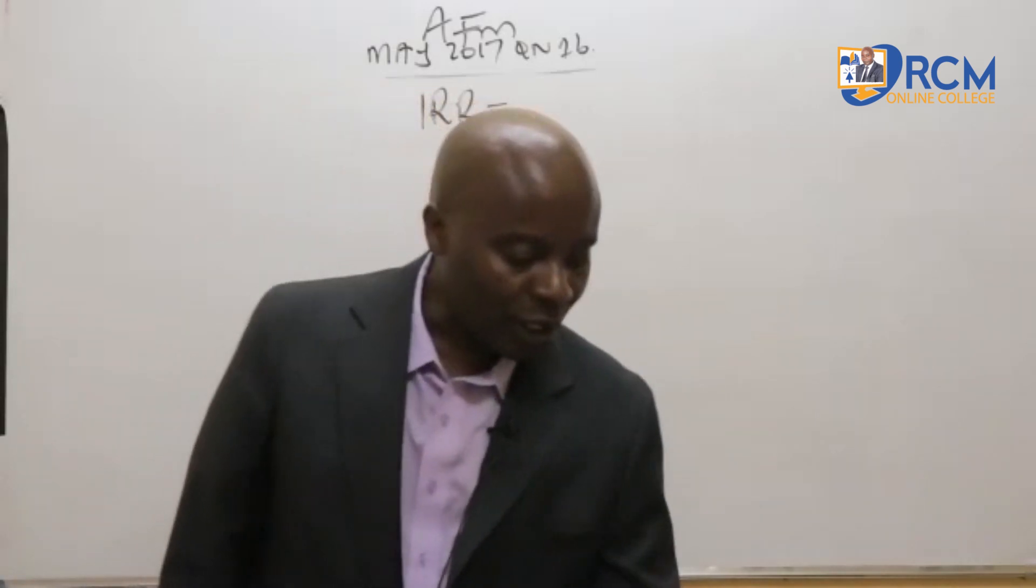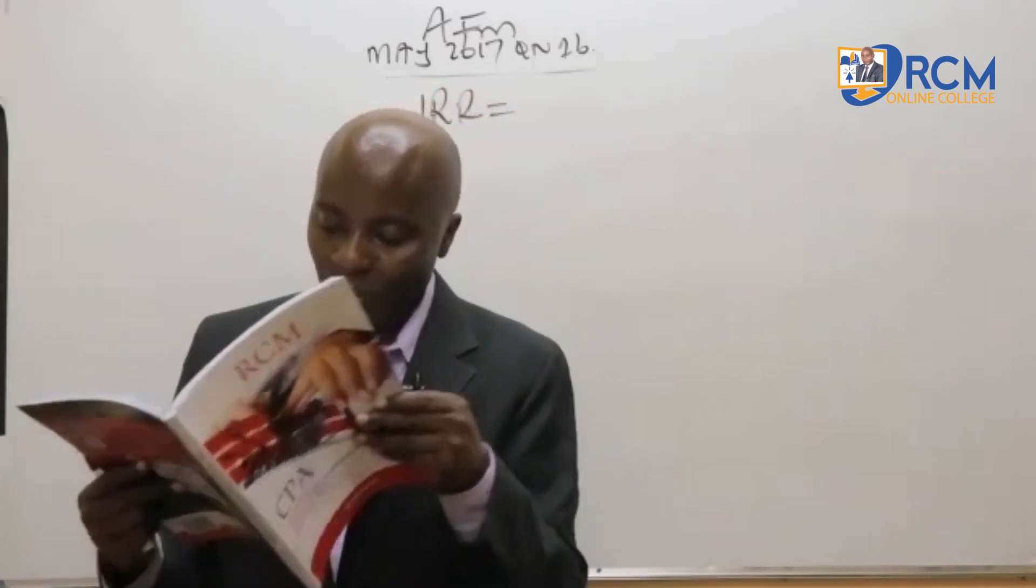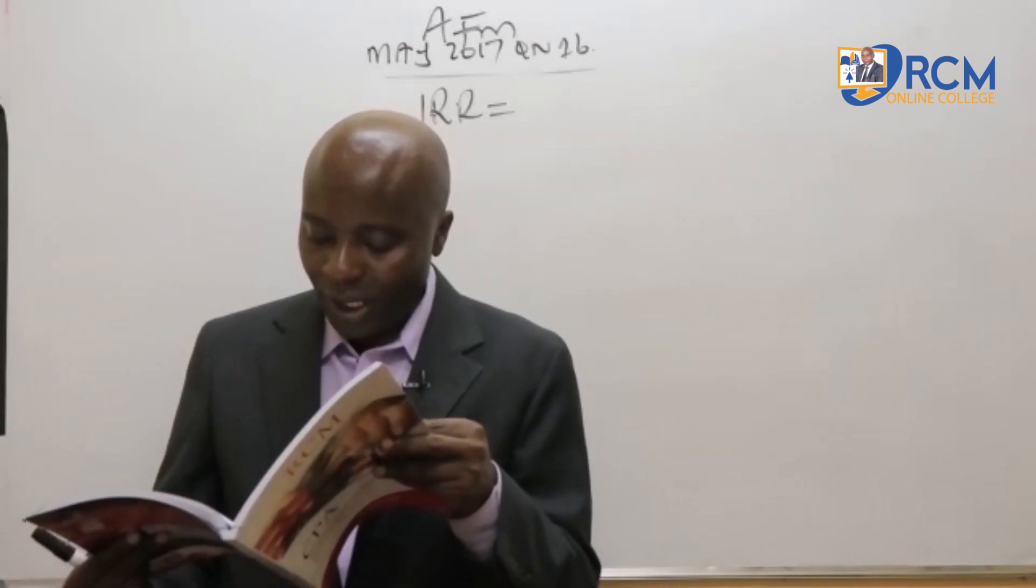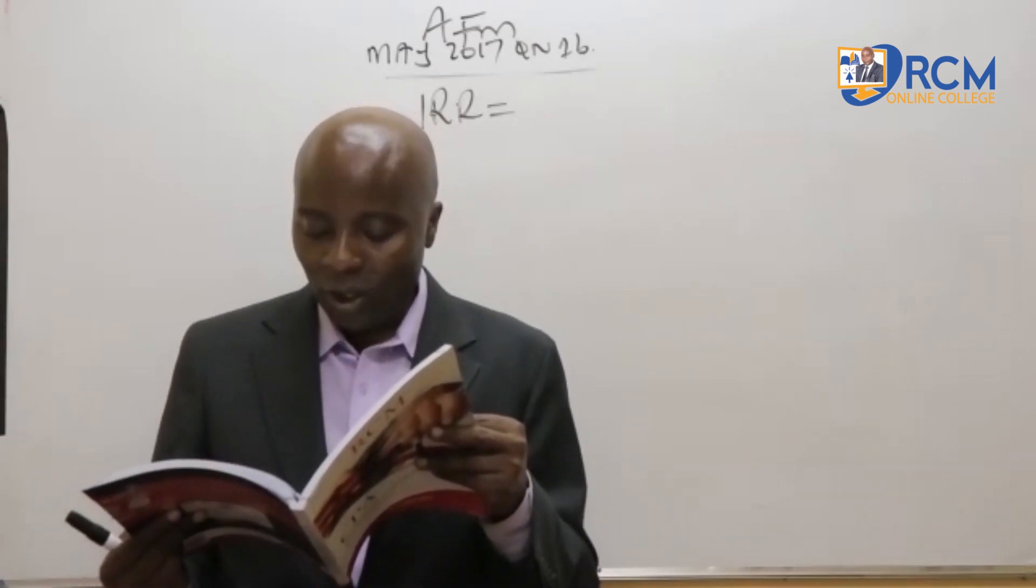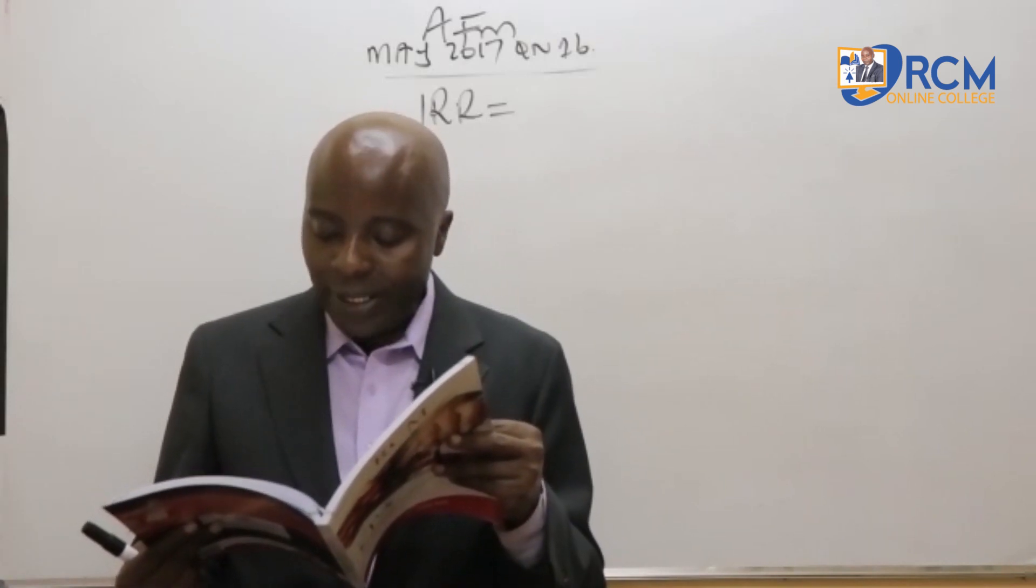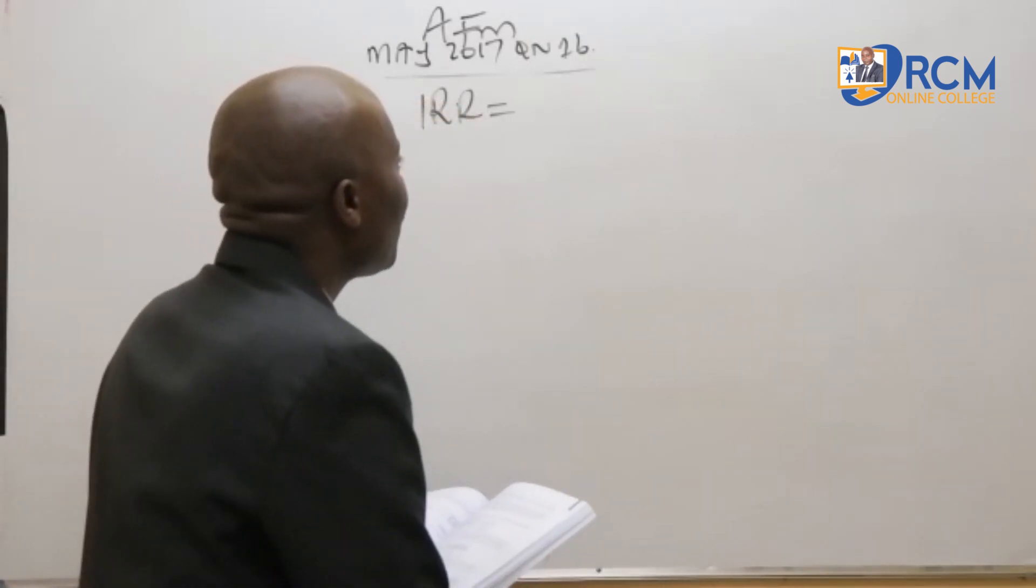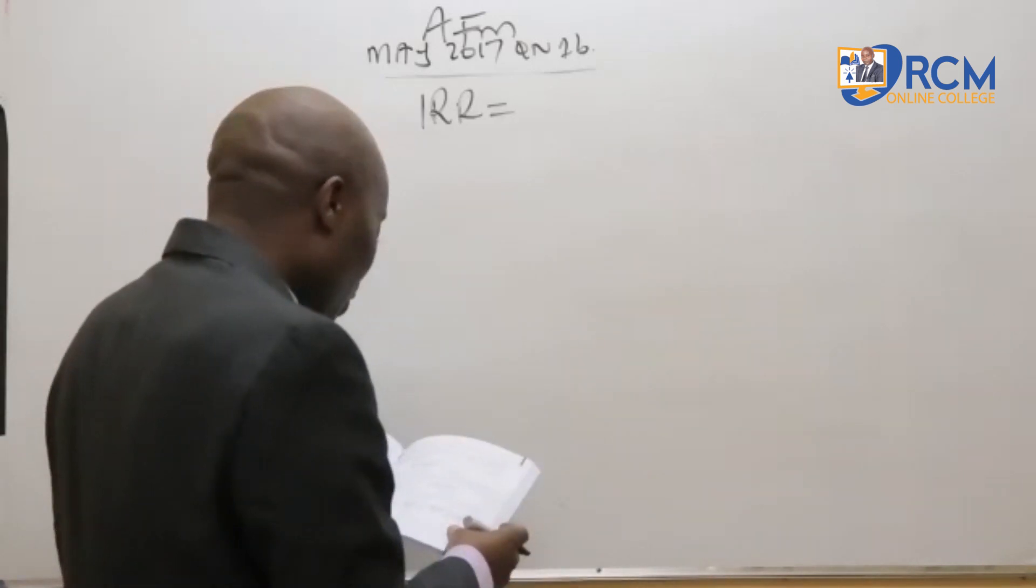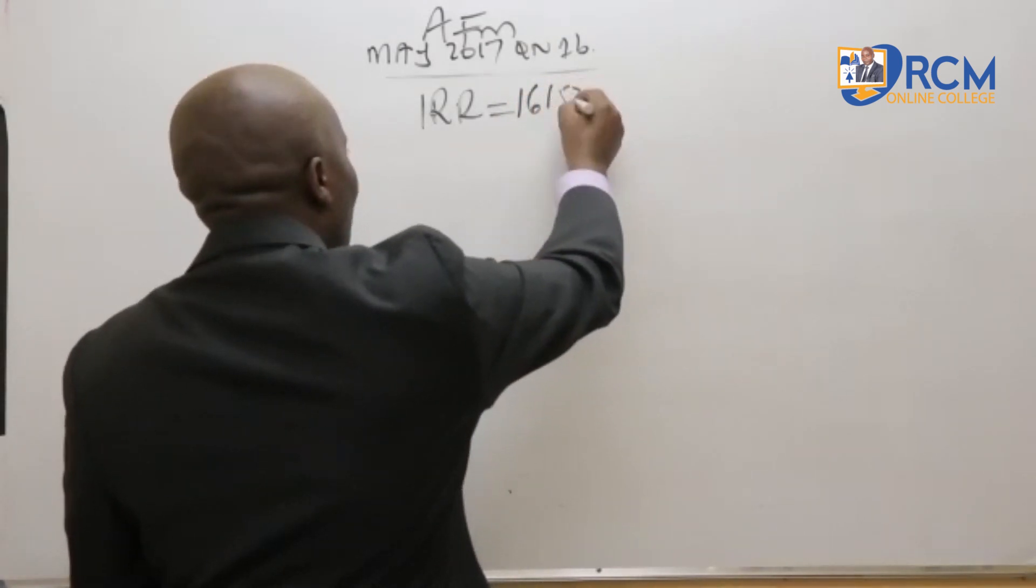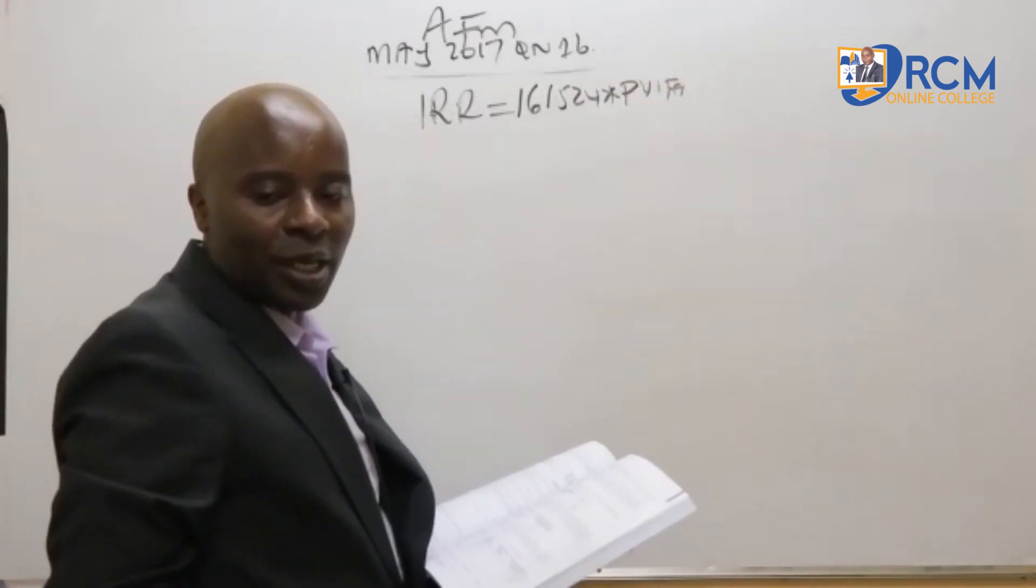So for project C that is missing there, for project C which is missing here. I can see the cash outlay, the initial cost there is 375,000, and then the annual net cash flow is 161,525. Out of this annual net cash flow, I should be able to discount this to get the present value. So I can see the annual net cash flow is 161,524. Because it is an annual cash flow, I have to apply it with PVIFA, present value interest factor of an annuity.